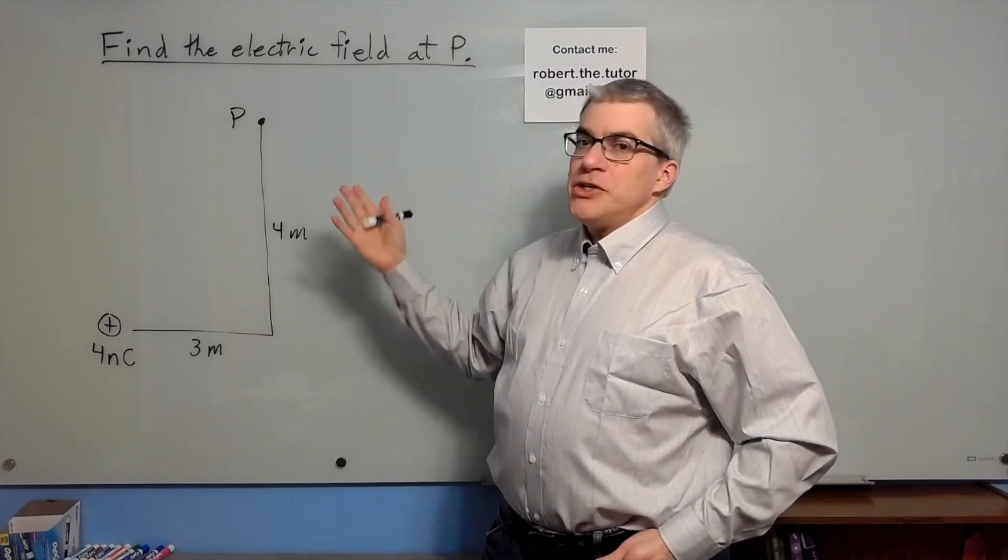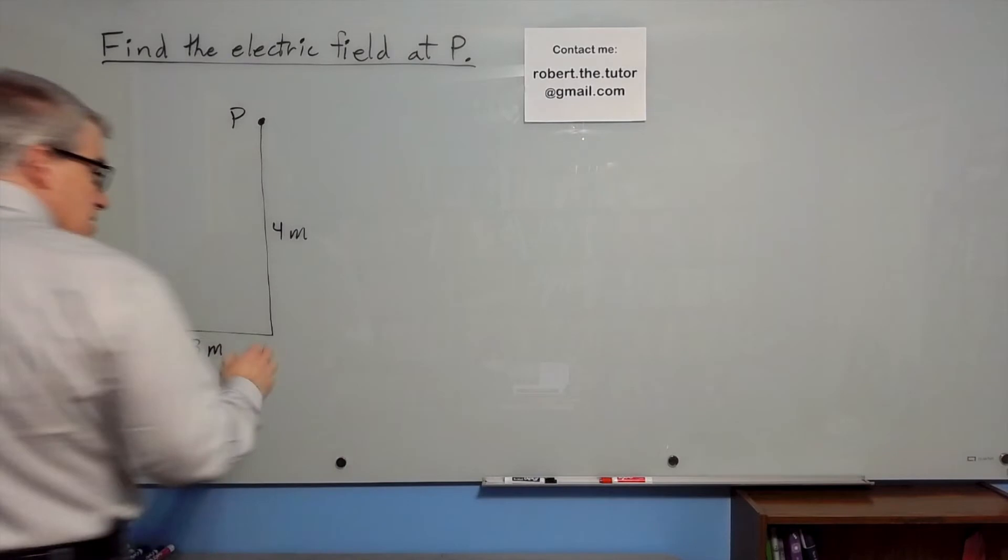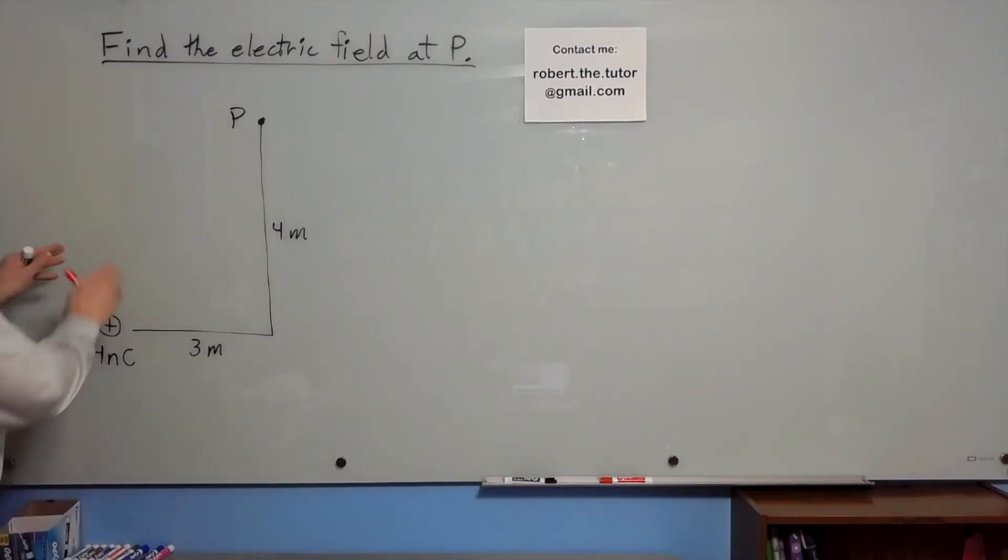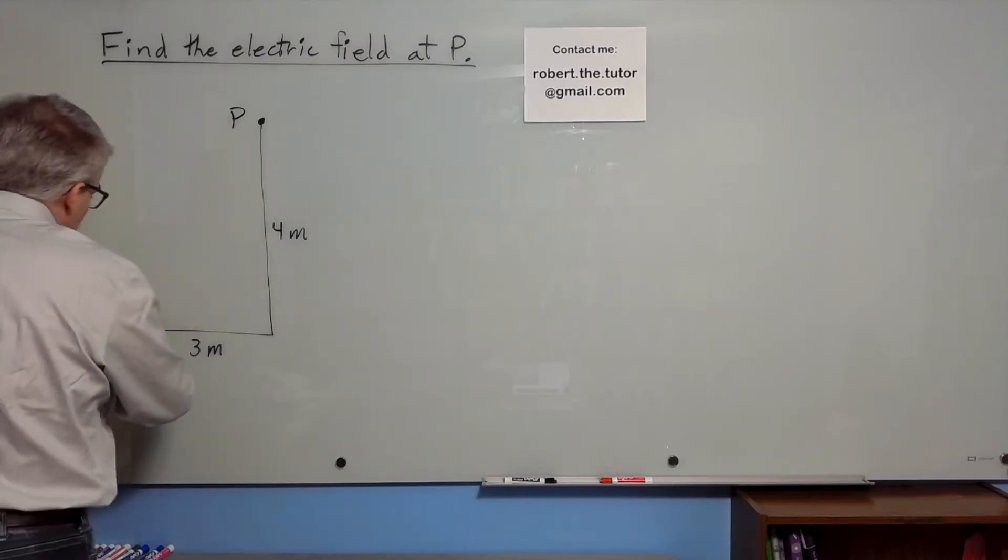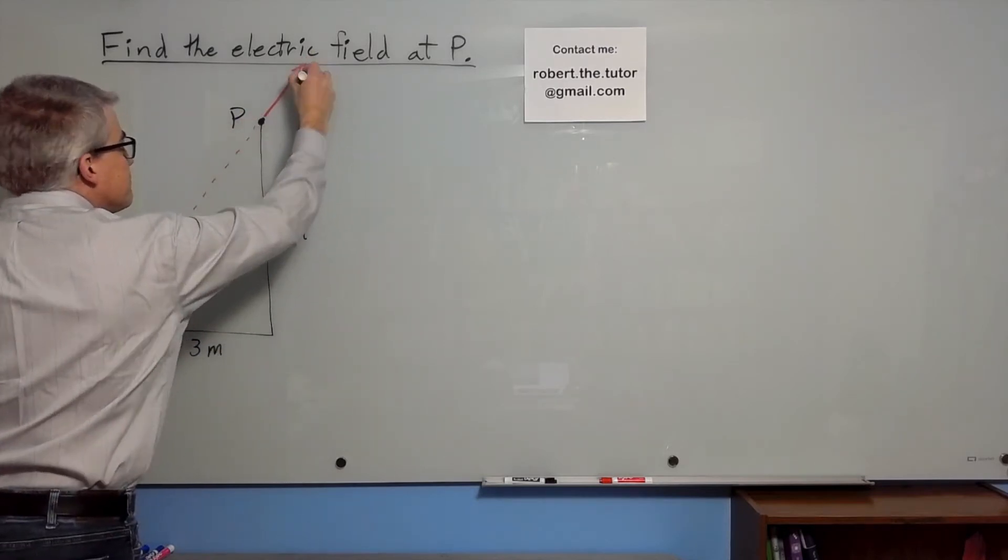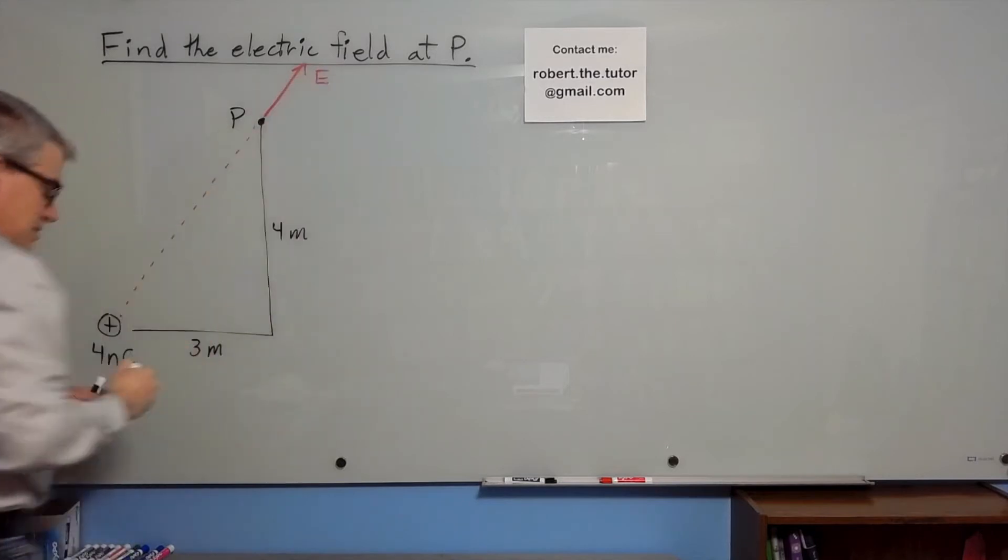What do we need to do to do this? First of all, let's think about it conceptually. This is a positive charge, so the electric field created by it should be pointing away from it everywhere. It's radiating outward. So if we imagine going this way, the electric field should look like that.